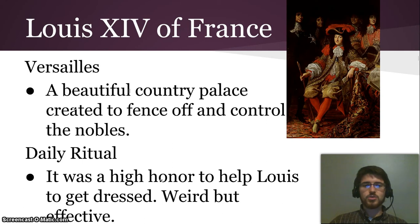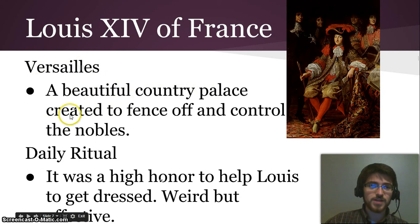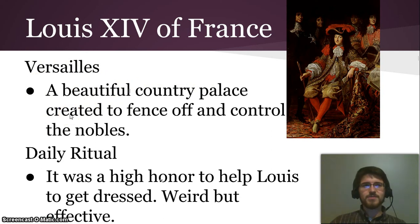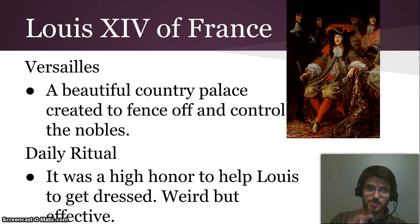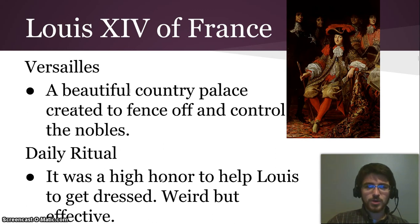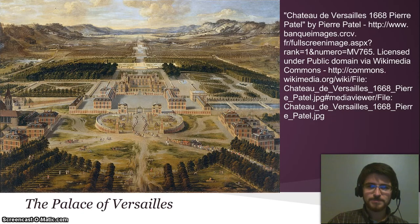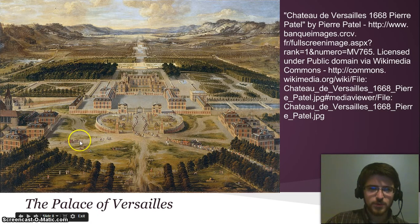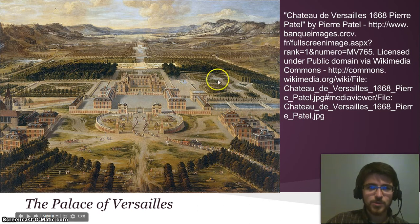Louis XIV of France did a couple of important things we remember him for. First, he totally controlled the nobility using two methods. He controlled them using the Palace of Versailles, this beautiful country palace where he basically invited — and when I say invited, I mean kind of forced — all of the nobility to show up at Versailles and kept them there to keep his eye on them and make sure they weren't getting out from underneath his control. Here's a picture of the Palace of Versailles — huge, beautiful, with enormous amounts of money spent on it, with all of the nobility living in various areas within the palace grounds.